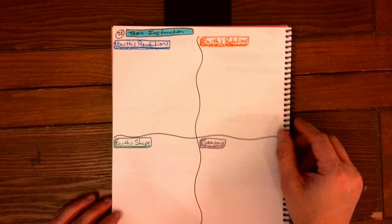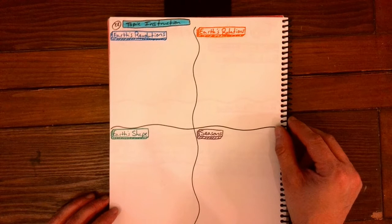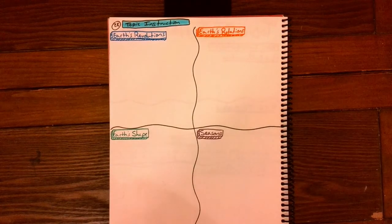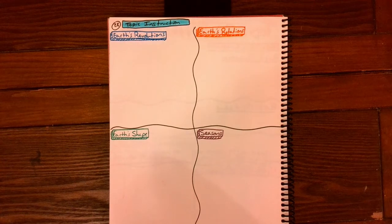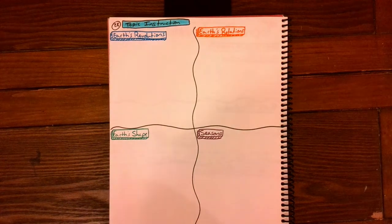Page 28. Please call this topic instruction and divide this page into four boxes. In these boxes, you will be creating graphic notes based on the CK-12 mini book that I have shared with you for the week.